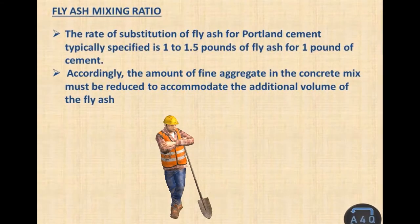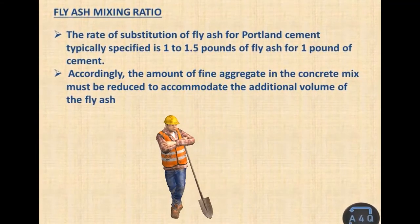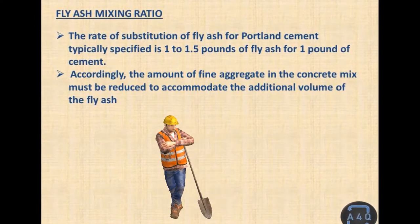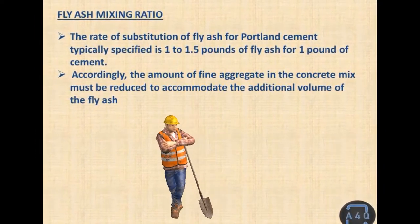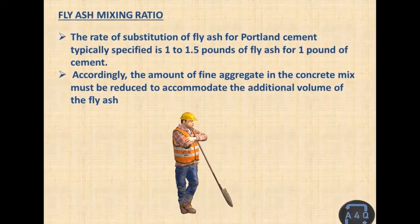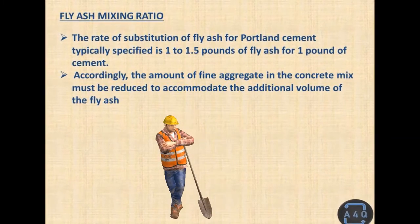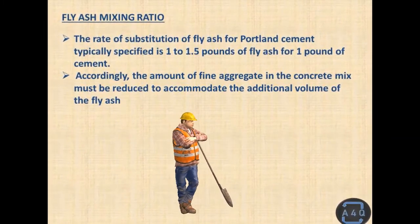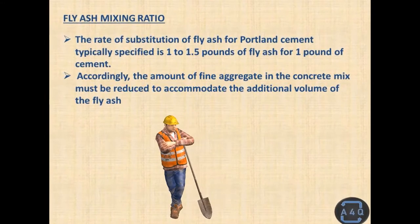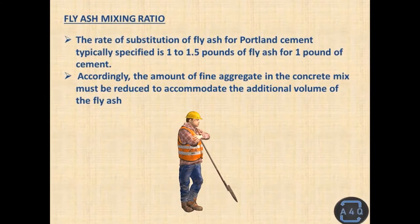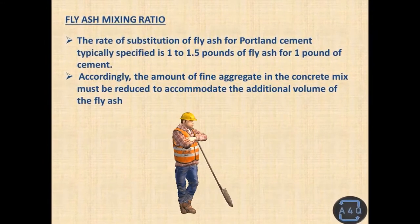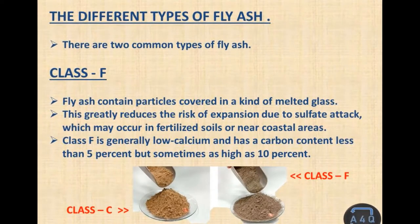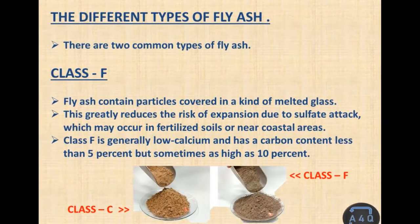Fly ash mixing ratio: the rate of substitution of fly ash for Portland cement is typically specified at 1 to 1.5 pounds of fly ash for 1 pound of cement. Accordingly, the amount of fine aggregate in the concrete mix must be reduced to accommodate the additional volume of the fly ash.